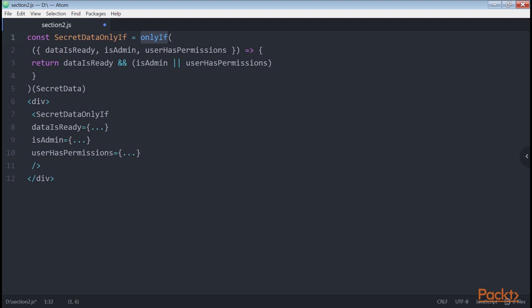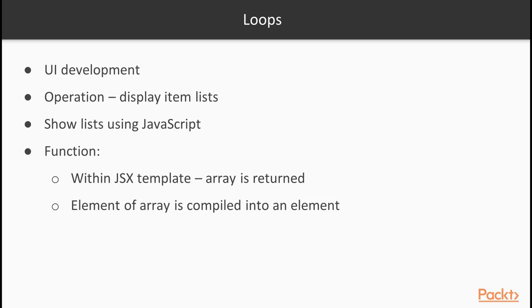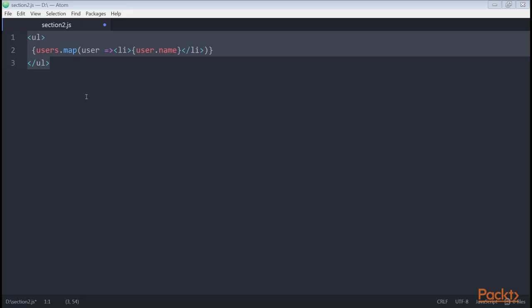In this way, we avoid polluting our component with conditionals so that it is easier to understand and reason about. Proceeding, we have loops. A very common operation in UI development is to display lists of items. If we write a function that returns an array inside our JSX template, each element of the array gets compiled into an element. Suppose you have a list of users, each one with a name property attached to it. To create an unordered list to show the users, you can use this code — this snippet is incredibly simple and incredibly powerful, where the power of HTML and JavaScript converge.